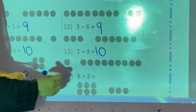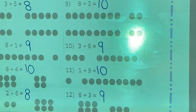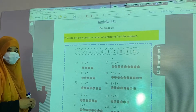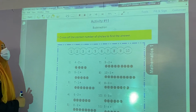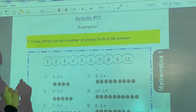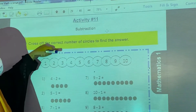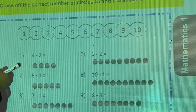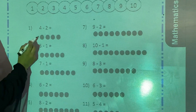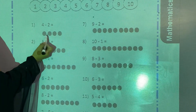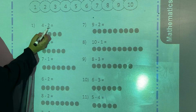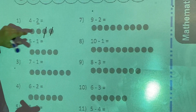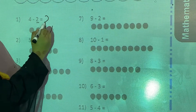Now we are going to start our activity number 11, which is about subtraction. Cross out the correct number of circles to find the answer. Looking at the first example: 4 minus 2. Total dots are 4 — how many do you have to cut? 2. Count: 1, 2. Now how many are left? 1 and 2. So 4 minus 2 is equal to 2.